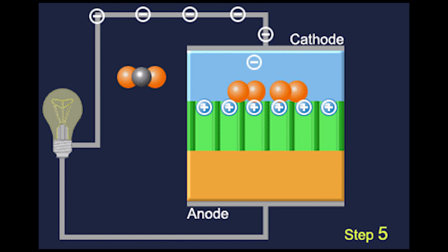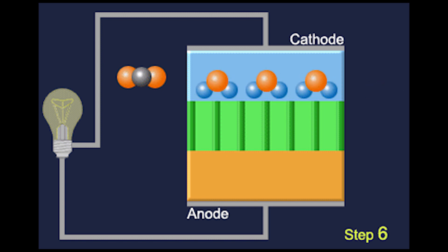After performing work, the electrons rejoin the bonded hydrogen cations, carbon dioxide, and oxygen anions to produce H2O and a very small amount of carbon dioxide, which subsequently exits the fuel cell.